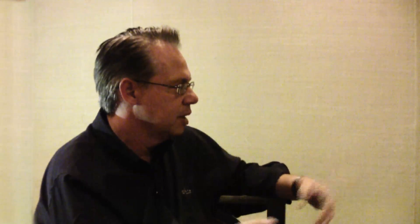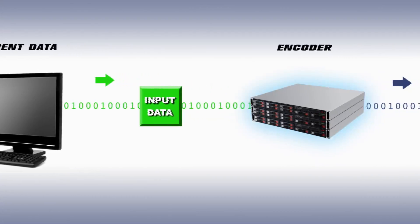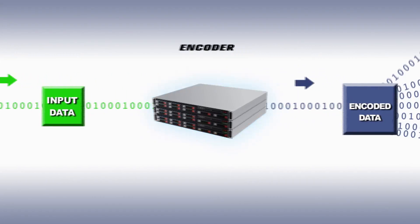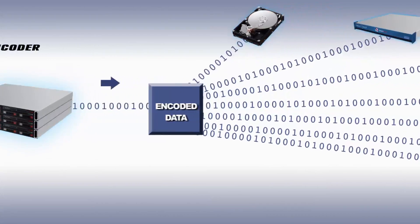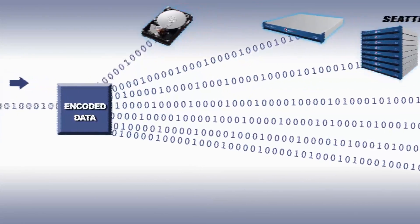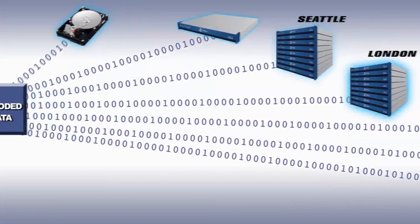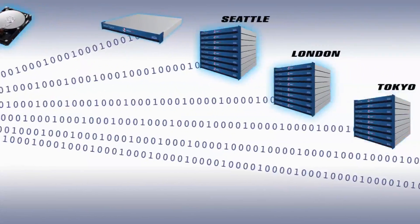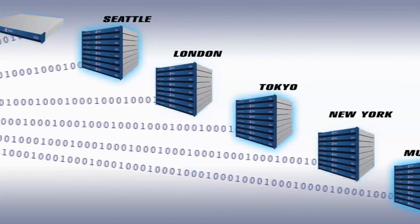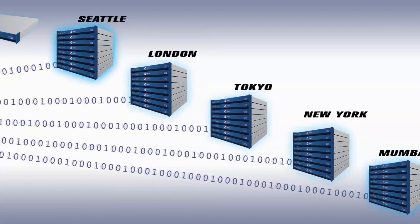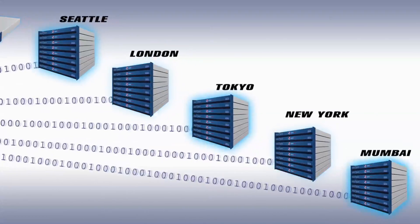How does an object get stored in AmplaStore? An application sends some kind of object they want to store — a file, typically a media file or a document. It's sent to a controller, which receives it over a REST interface or a language API call. The controller runs the bit spread encoder, which first segments the object into sub-chunks, then transforms every one of those sub-chunks into a representation of the object using a mathematical equation. The output is thousands of equations that represent the original source data sent from the application.